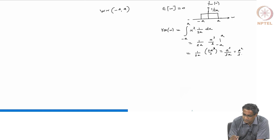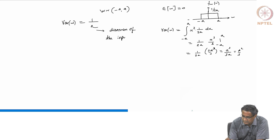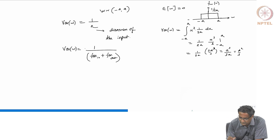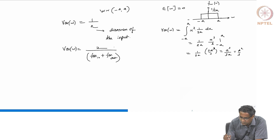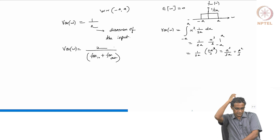So Var(w) = a²/3, and we said Var(w) should equal 1/n, where n is the dimension of the input. But suppose you want to take both input and output into account — then this becomes 2/(fan_in + fan_out), since you are taking the average of both and scaling by 2. So a²/3 = 2/(fan_in + fan_out), which the author writes in the paper — taking fan_in and fan_out both into account.